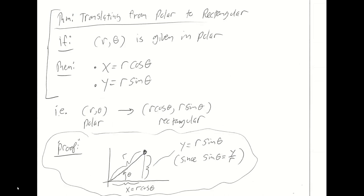We can also go from polar to rectangular. If somebody hands you an r-theta pair, you can write down the x and y values: x equals r cosine theta, and y equals r sine theta. The proof is simpler here — we don't need inverse trig, because we already know the hypotenuse and the angle, and we're solving for the legs. Since sine of theta equals y over r, y must be r sine theta, and similarly x equals r cosine theta.